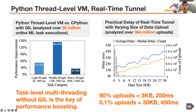We next compare Wally's Python thread-level virtual machine with the original CPython. Results show that the Python thread-level virtual machine gains great performance improvements, confirming that task-level multithreading without GIL is the key to performance boosting. We finally report the latency of the real-time tunnel over roughly 364 million uploads. More than 90% of uploads are under 3 kilobytes, with less than 250 milliseconds on average.